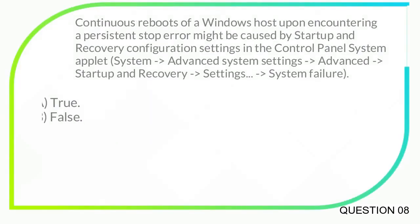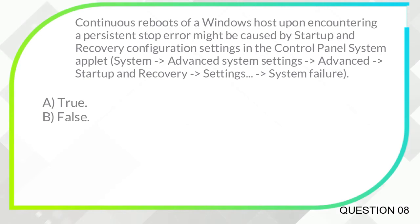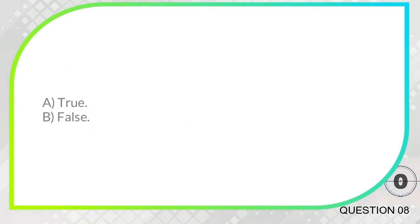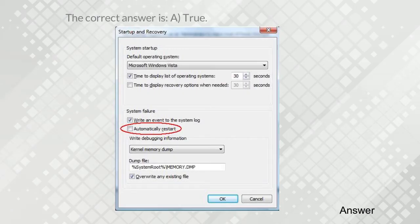Continuous reboots of a Windows host upon encountering a persistent stop error might be caused by startup and recovery configuration settings in the Control Panel System applet: System > Advanced system settings > Advanced > Startup and Recovery settings > System failure. True or False? The correct answer is A. True.